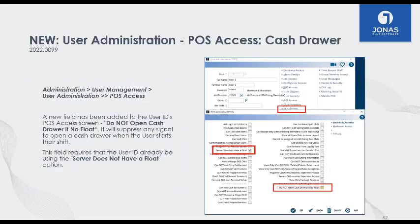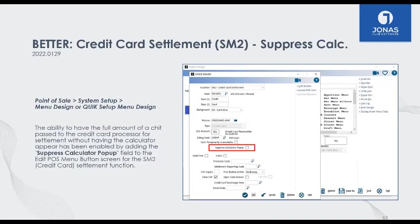The next Point of Sale feature relates to the cash drawer: if your cash drawer was opening every time you do a transaction, you can now set it so that if you don't have a cash float, the cash drawer will not open. Also, if you have a credit card settlement button on your menus, you can now suppress the calculator from popping up. Previously it would show the total being charged and let you adjust it; now it will go right to the credit card screens — similar to the Quick Member Charge button.